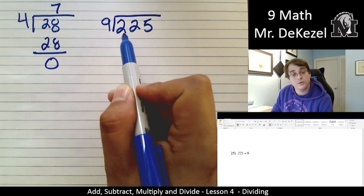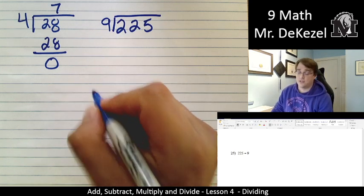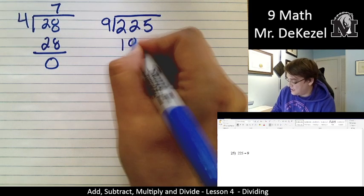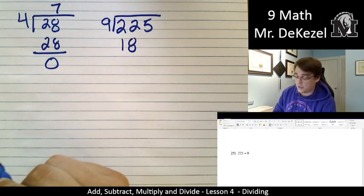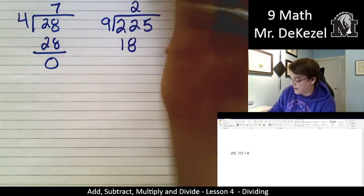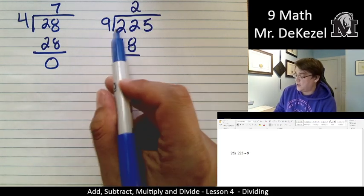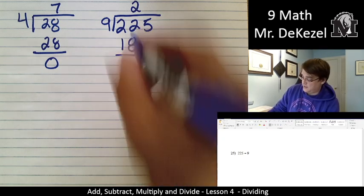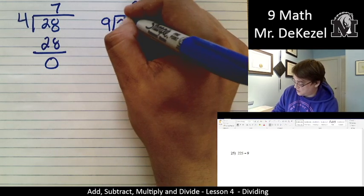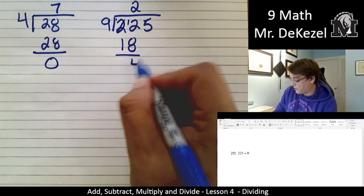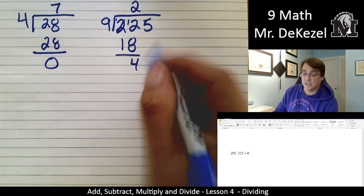Nine goes into 22 though. How many times does it go into 22? Well, it turns into 18 if we multiply it by 2, and it can't go any more than that. So we're going to write a 2 up top and 18 down here, and we're going to subtract these numbers. 2 minus 8 can't be done, so we're going to go back to our subtraction part. We're going to borrow, turn that into 12. 12 minus 8 is 4, and 1 minus 1 is zero, so we're going to leave it.